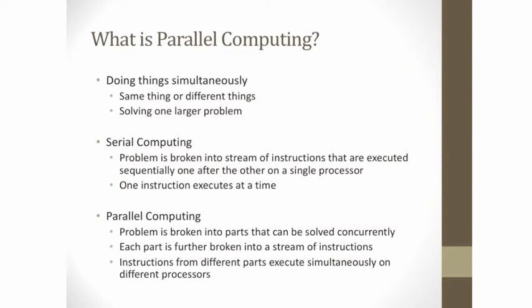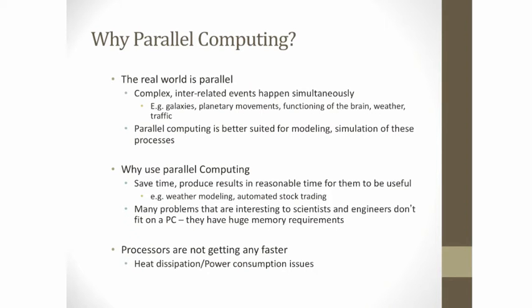What differentiates parallel computing from serial computing is that you are executing different instructions of the different parts simultaneously. If you look at galaxies, planetary motions, how the brain functions, how weather modeling is done, how traffic moves — all of these real-world phenomena are parallel by nature. These are complex, interrelated events happening simultaneously. So it makes sense, if you want to model them, to do the simulation in parallel.